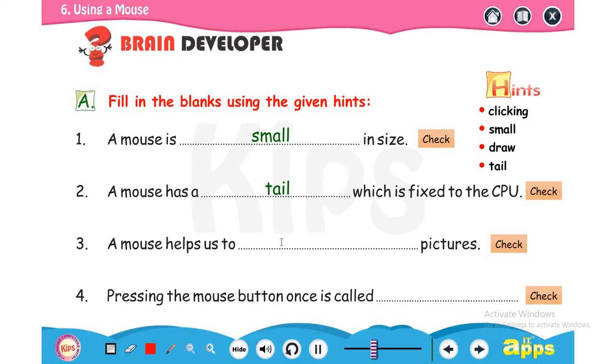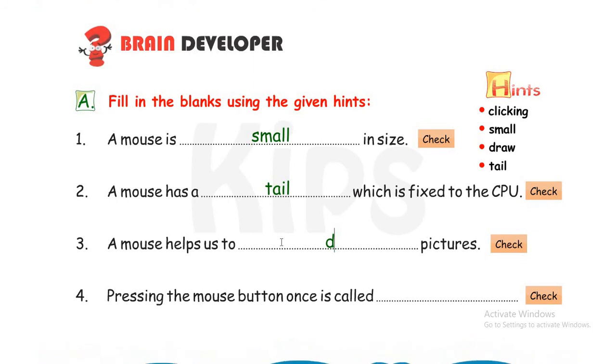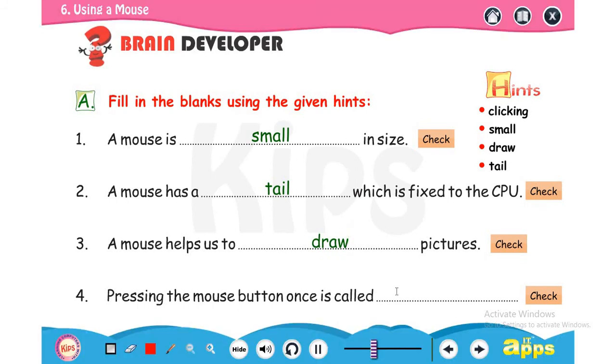A mouse helps us to draw a picture. With the help of mouse we can draw a picture in Microsoft Paint or any other application. With the help of mouse we can select any application, open any file, folder, anything. With the help of mouse there are different functions or uses. Pressing the mouse button once is called clicking.